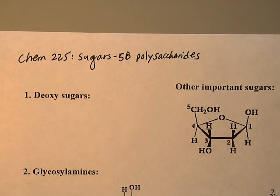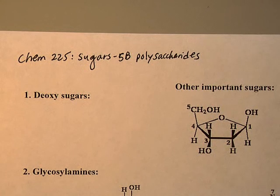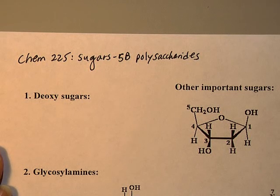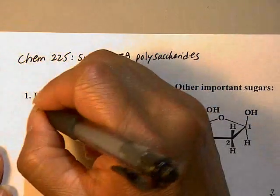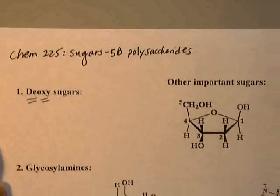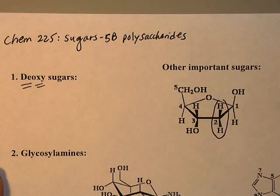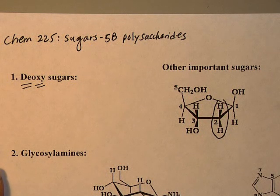I'm going to start with probably the most important sugar in nature: the deoxysugars. As the name says, 'deoxy' means it's missing something. Deoxyribose is missing an OH at C2 — the OH is not there, but it's replaced by H.